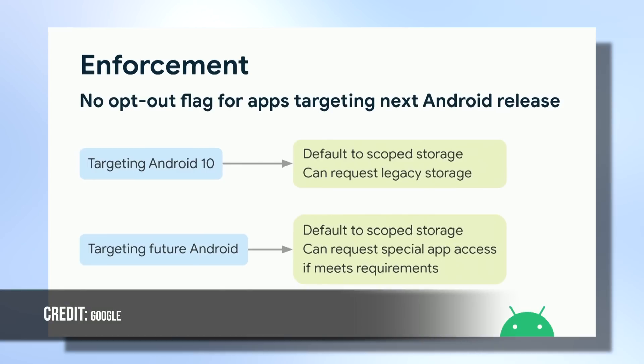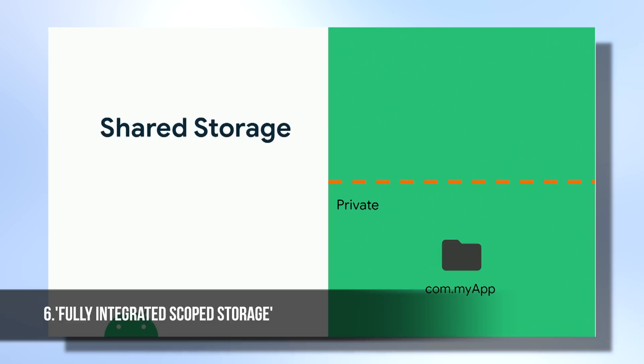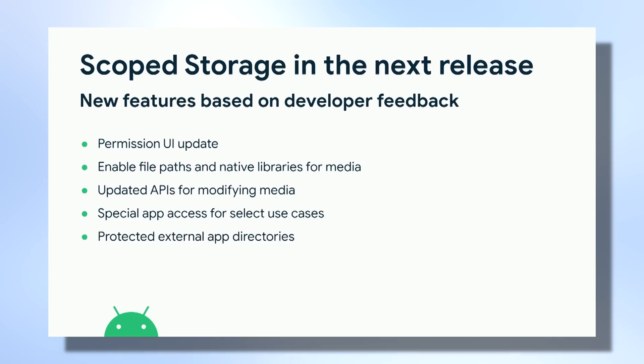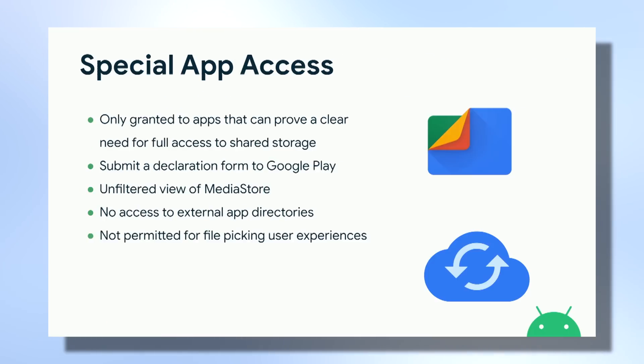The sixth feature is a very interesting one and something that was actually rumored to come with Android 10. But now, fast forward a year, it looks like we might finally be getting it — and that is, of course, scoped storage. It looks to optimize privacy and the speed of memory reading. Basically, your device will create a second folder for files created by an individual app, and other apps will be restricted from gaining access to that data, making your phone more secure.